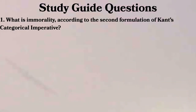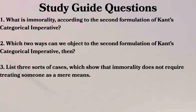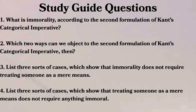So here are some objections to Kant. One: what is immorality according to the second formulation of Kant's categorical imperative? Two: which two ways can we object to the second formulation of Kant's categorical imperative? Three: list three sorts of cases which show that immorality does not require treating someone as a mere means. Four: list three sorts of cases which show that treating someone as a mere means does not require anything immoral.